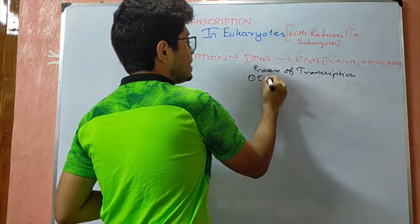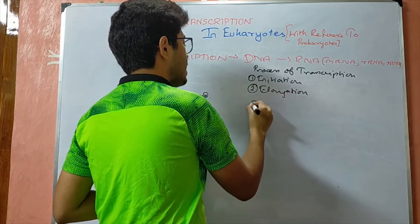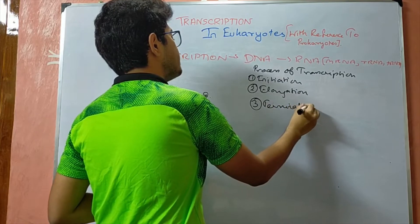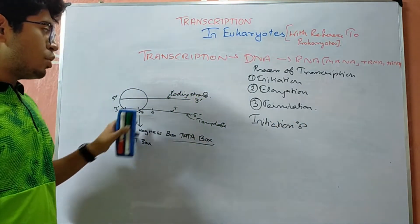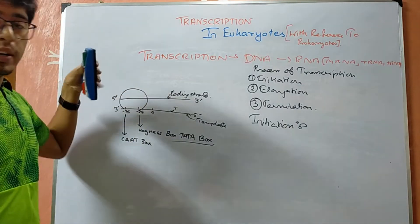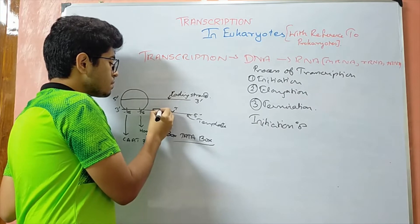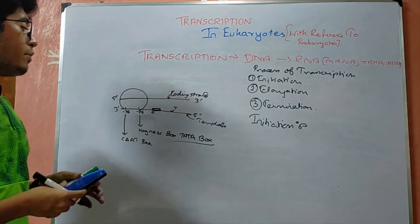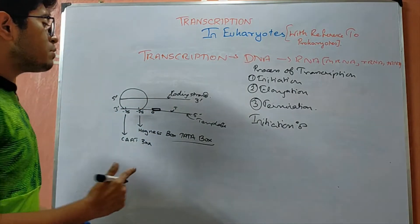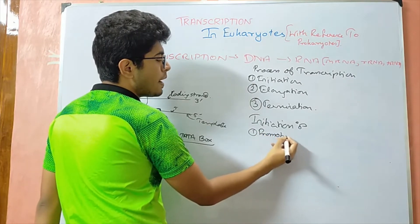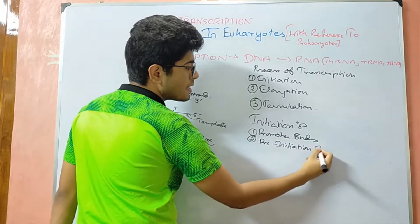The process of transcription can be divided into initiation, elongation, and termination. In the initiation process, there will first be binding of the RNA polymerase to the promoter sequence. This binding will then lead to the formation of a complex known as the pre-initiation complex.